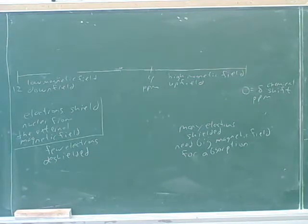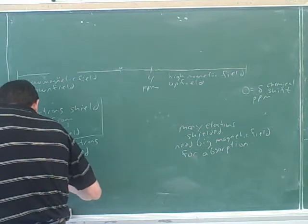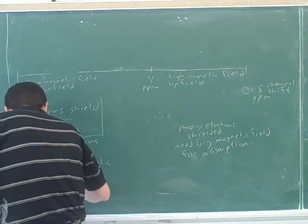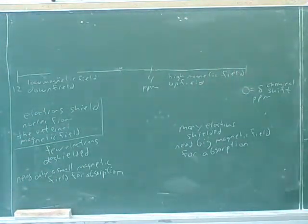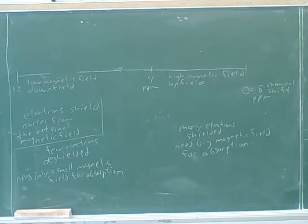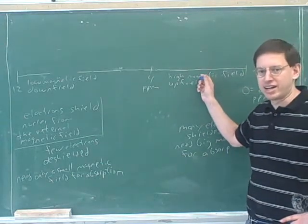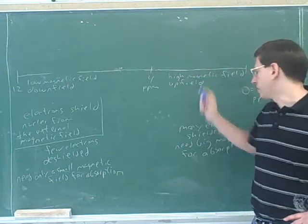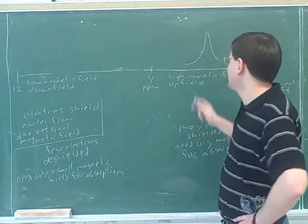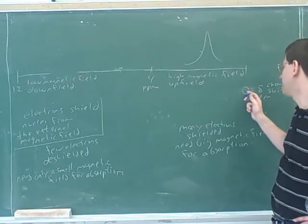If you're deshielded, you need only a small magnetic field for the absorption. So going back to here: if you're well shielded, you need a larger magnetic field, so your peak would be on the right-hand side. Unfortunately, the chemical shift scale is inverted relative to the magnetic field scale. If you have many electrons and are well shielded, you need a big magnetic field — that corresponds to the high magnetic field region, which means a low chemical shift.